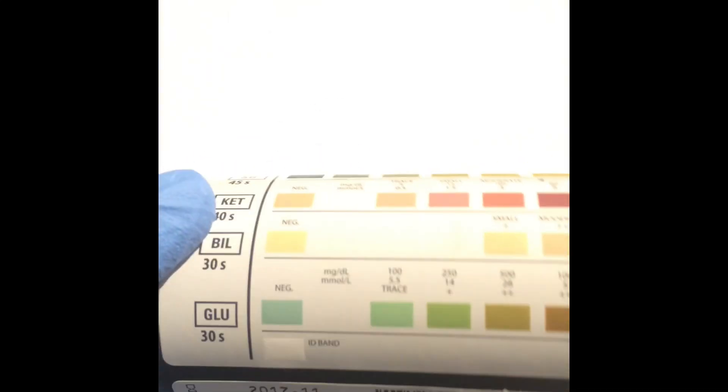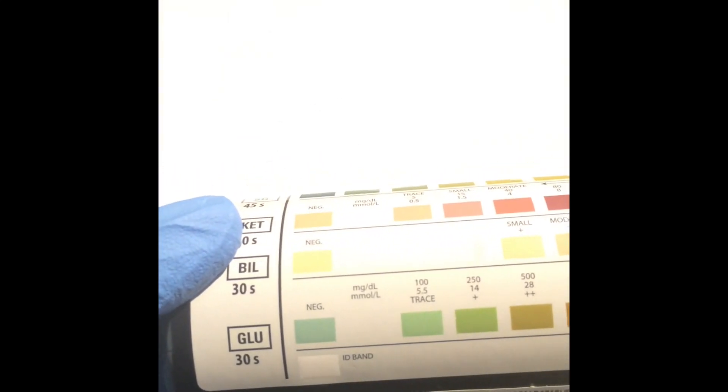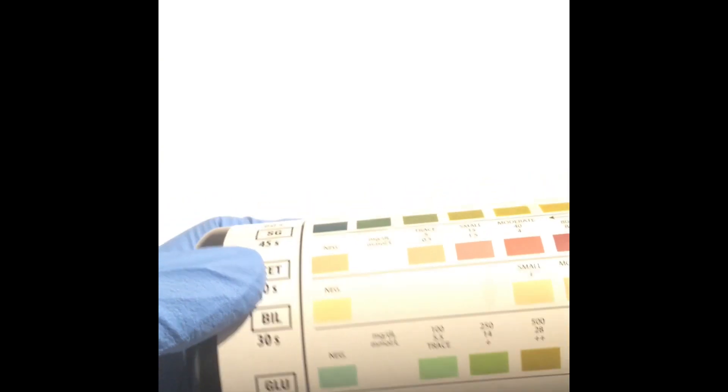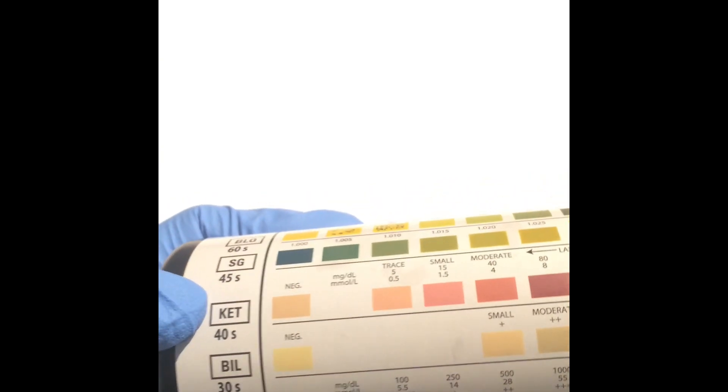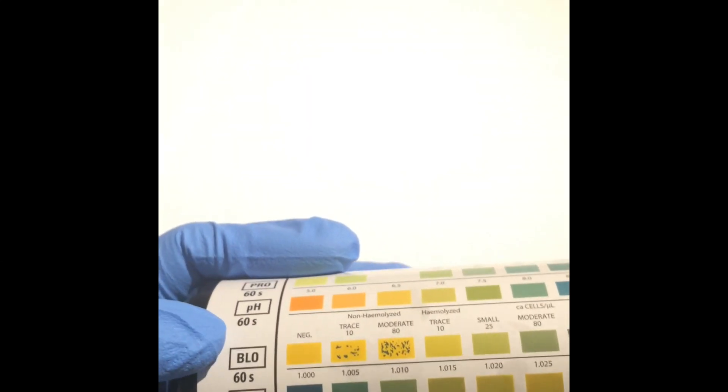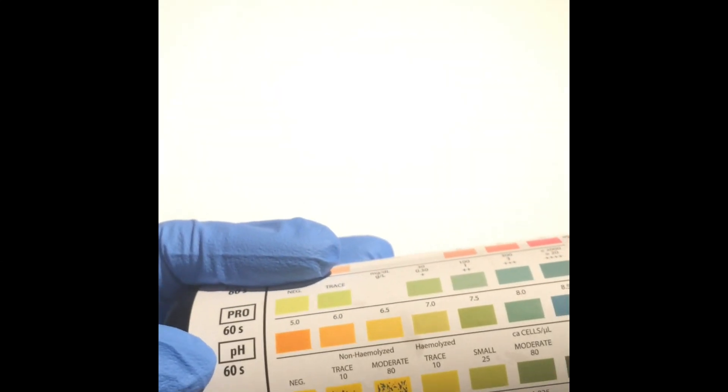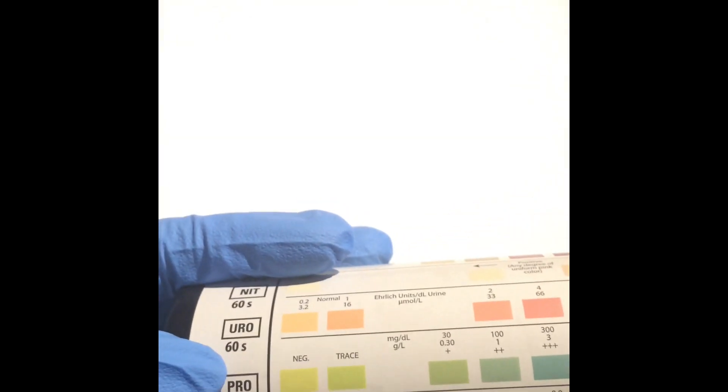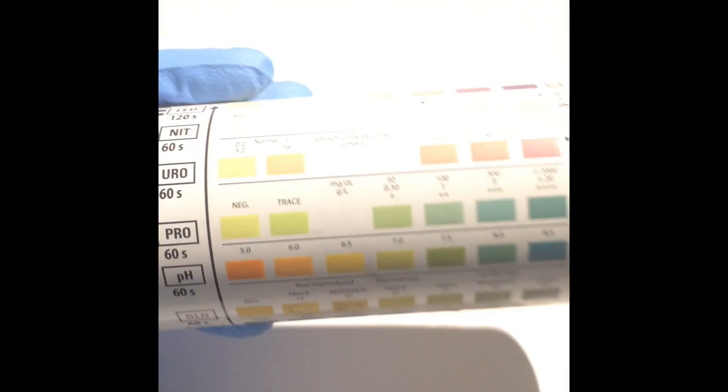Looking at the side of the bottle are the various colors that can be seen on the dipstick. Each parameter has a specific time to be read. For example, 30 seconds, 60 seconds, 120 seconds, etc. So don't forget to keep a stopwatch if you're doing this test manually.